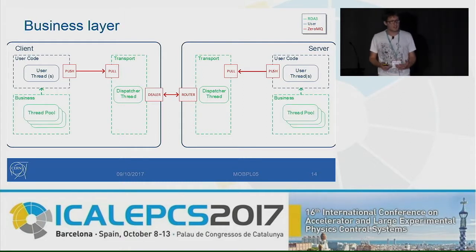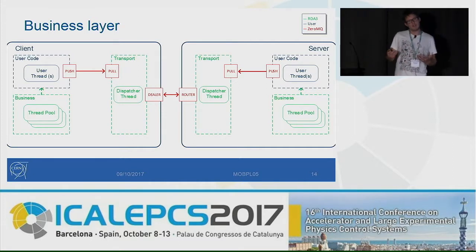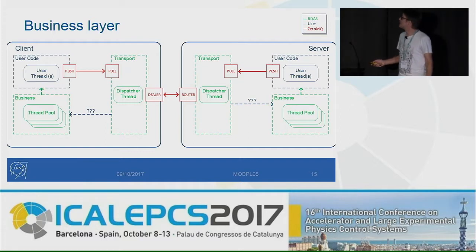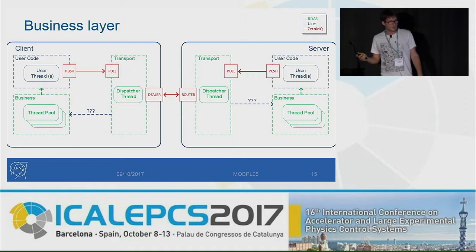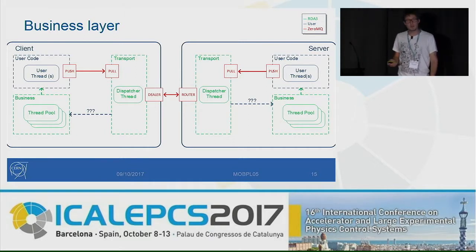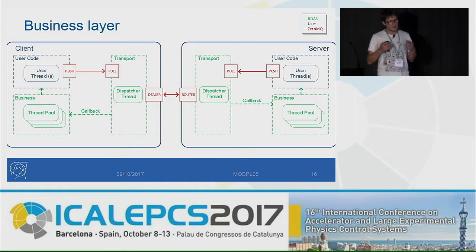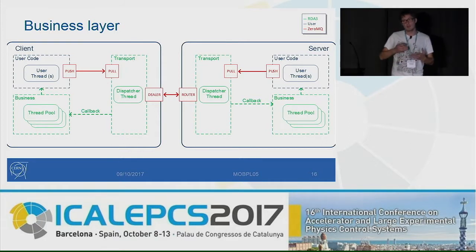The business layer at its core is just a thread pool. It receives the messages and performs callbacks on the user code. We also need communication the other way — from the transport, send back messages to the business. It's possible to use 0MQ for this, for example using fair queuing among the threads of your pool. But for RDA3, we decided to simply use a callback and delegate this responsibility to the business layer. So it's the business layer that performs the queuing and decides if a request must be dropped or not.